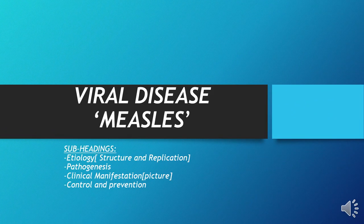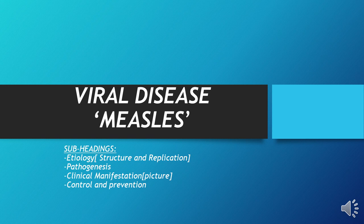Assalamualaikum. In this video we will understand the complete concept of a viral disease — measles. It is comprised of the following subheadings: number one, etiology, which is the study of the causative agent of disease including structure and replication of the virus; number two, pathogenesis; number three, clinical manifestation, also called clinical picture, signs and symptoms of disease; and lastly, control and prevention.